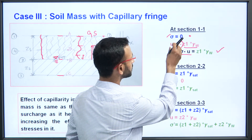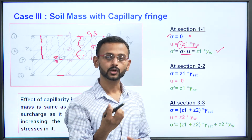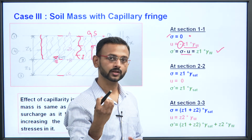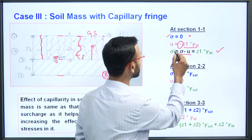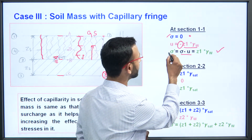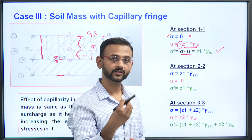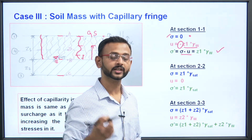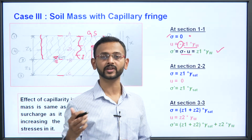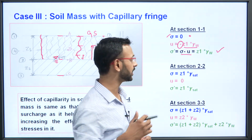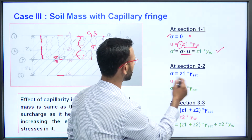The effective stress equals total stress minus pore water pressure, giving z₁ × γ_w. So the total stress value is 0 but the effective stress has a magnitude of z₁ × γ_w. Capillary has increased the effective stress, and this in turn increases the shear strength and affects different engineering properties of the soil.